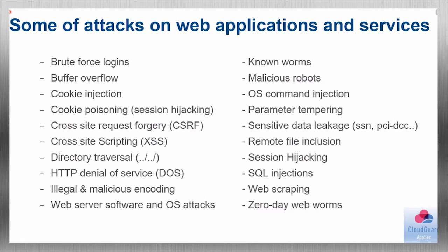Attacks that WAF protects against include: brute force — guessing usernames or file names; buffer overflow — writing to memory space not intended; cookie injection — using someone else's cookies to impersonate another user; cross-site request forgery — forcing an authorized user to take actions on an application; cross-site scripting (XSS) — forcing a user to take action on a site without their knowledge; directory traversal — exploiting a code omission allowing an attacker to walk through web server folders; HTTP denial of service — crashing the application due to code flaws; and web server OS attacks. Illegal or malicious encoding using Unicode in URLs can deceive victims into thinking an address is legitimate.